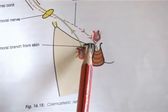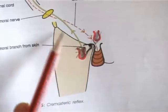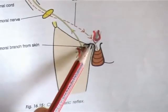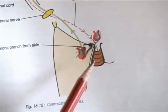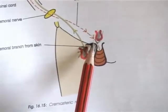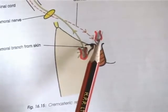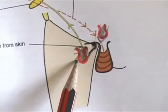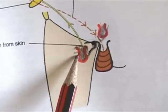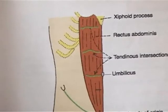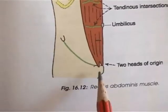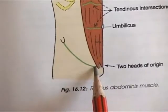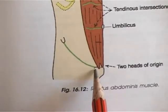Attachments on the pubis — the pubic tubercle: the medial end of the inguinal ligament is attached here, and ascending loops of the cremaster muscle are also attached to the pubic tubercle. It is an important landmark: inguinal hernia is seen above and medial to the pubic tubercle, whereas femoral hernia is seen below and lateral to the pubic tubercle. From the pubic crest is the origin of rectus abdominis — the medial head arises from the medial side and the lateral head from the lateral side.